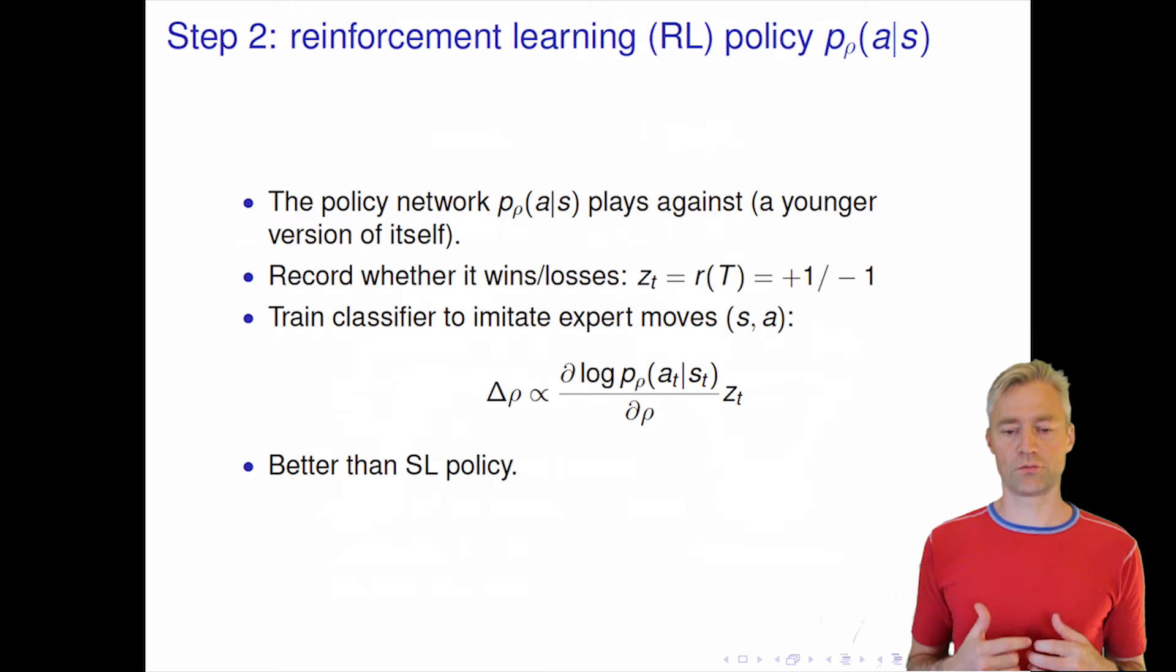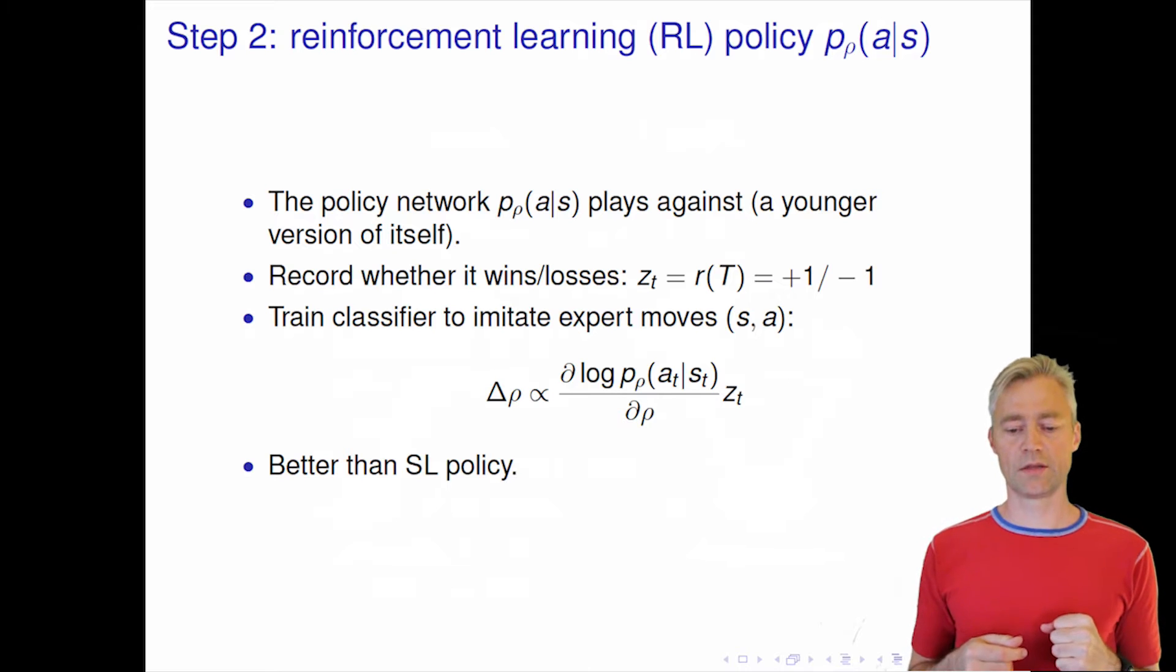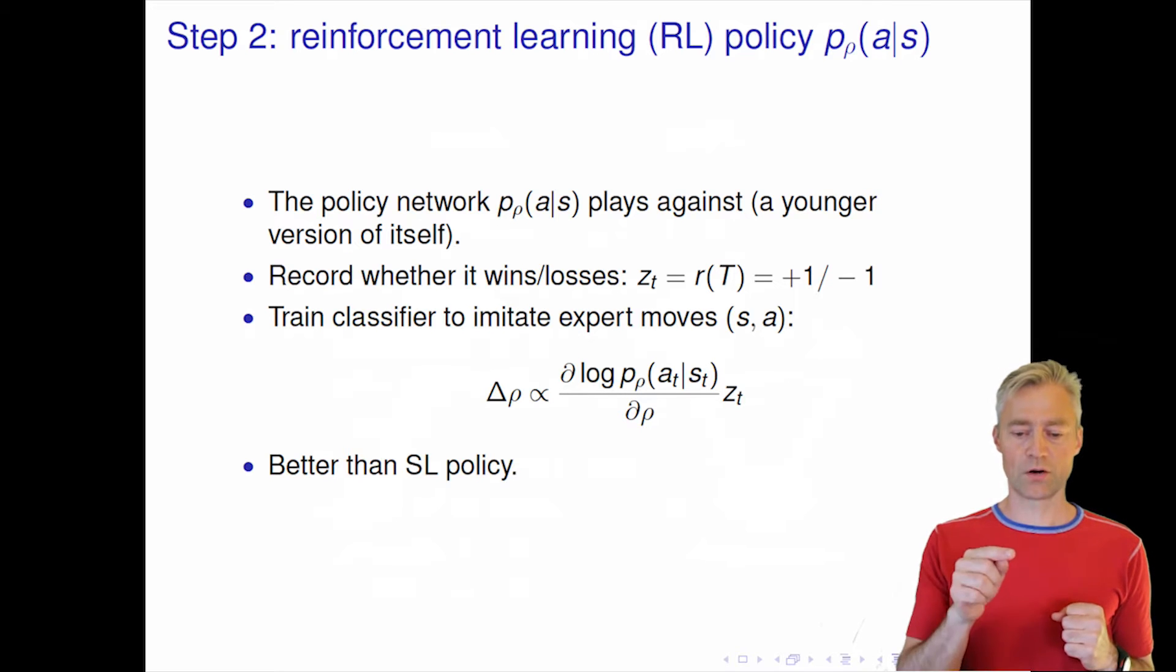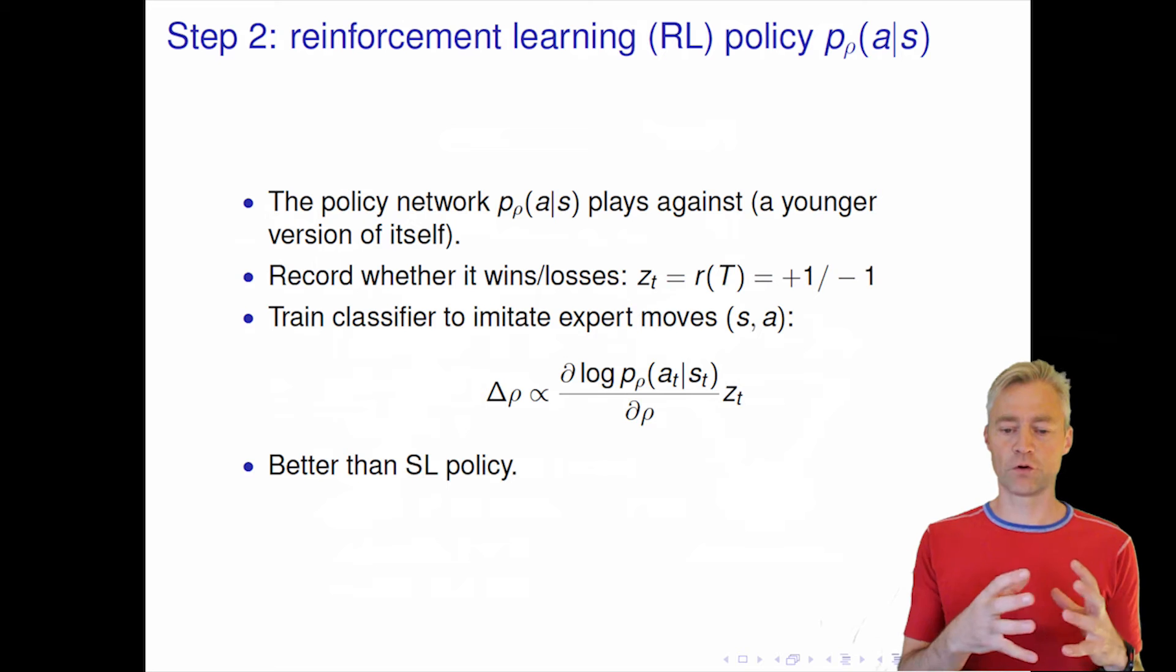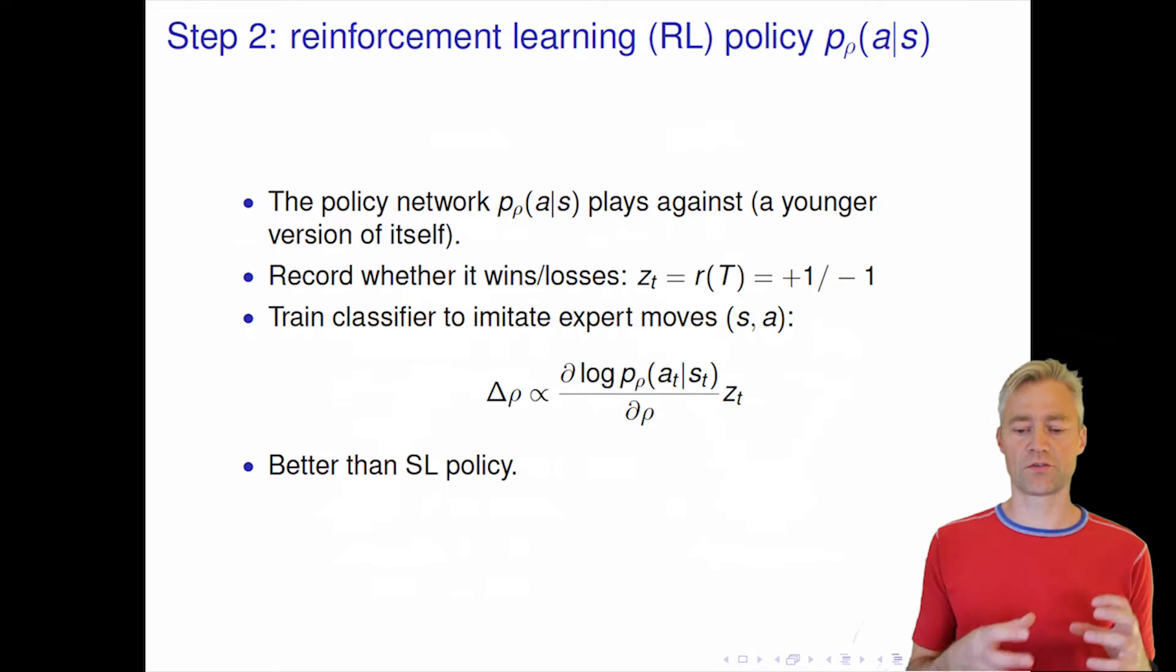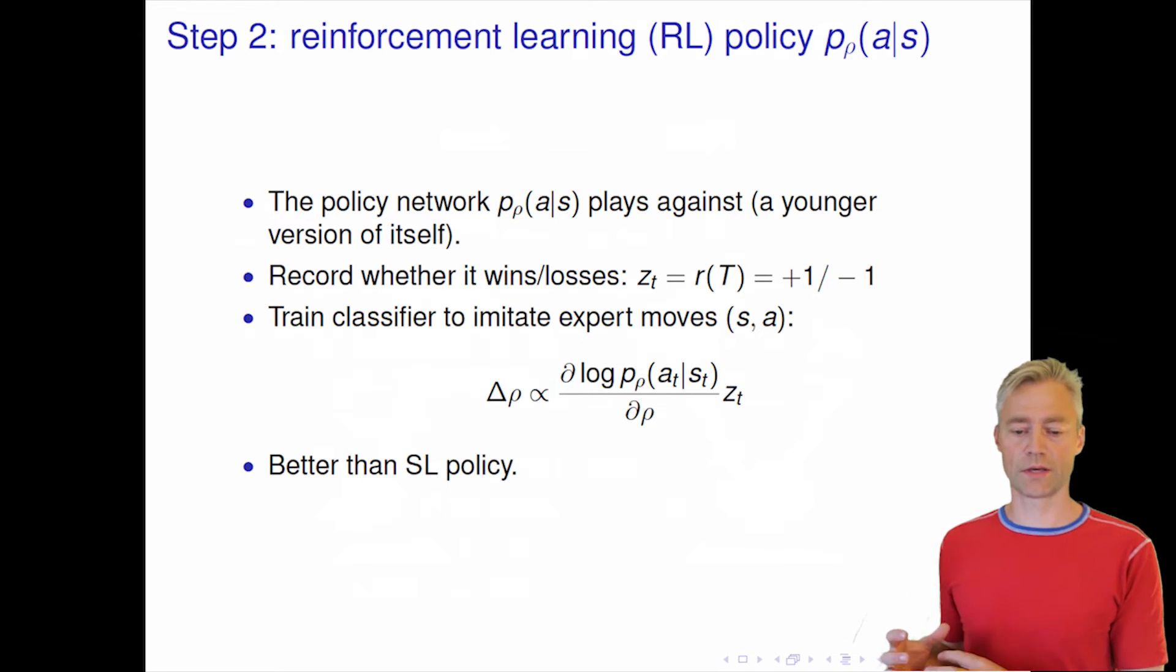Now our update for this reinforcement learning policy network is as given by this equation. You can see that again we have the derivative of the log probability of the actions, but now we multiply that by an additional plus or minus one factor. It's plus if the action we have here has actually led to a win, and it's minus if it's led to a loss.